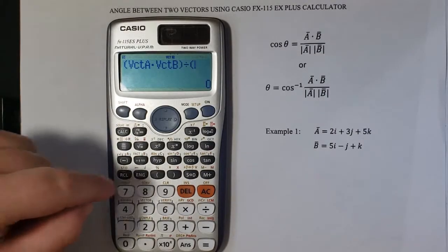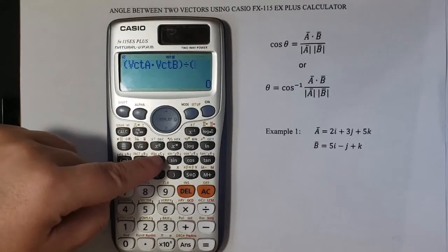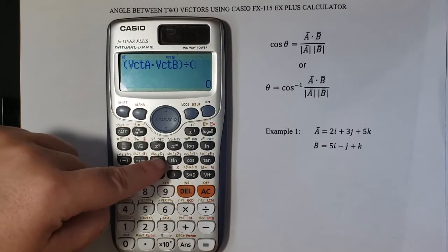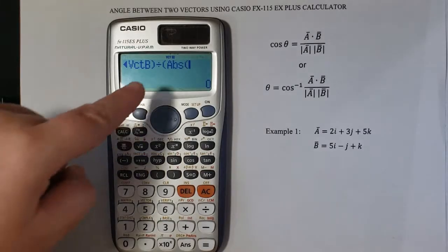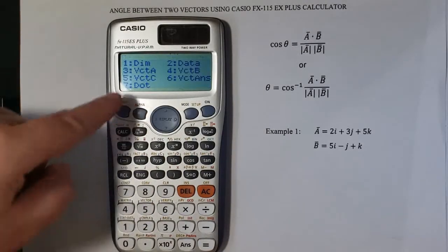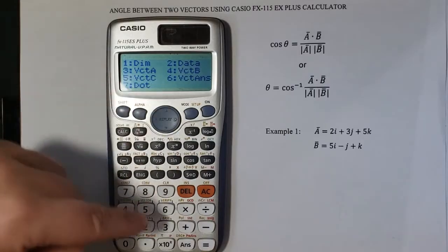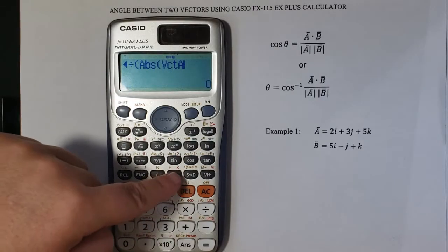I will press SHIFT and you see this absolute key here. That is how you can find the magnitude of a vector. Absolute, SHIFT again, vector 3 for vector A. Close.